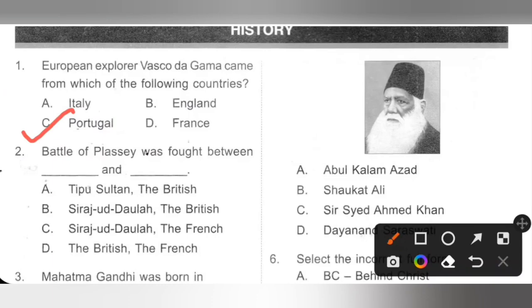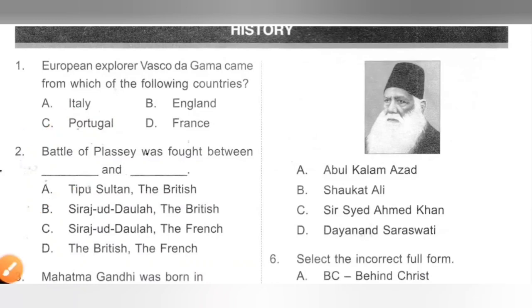Question 2: Battle of Plassey was fought between whom? The Battle of Plassey was fought between Nawab Siraj-ud-Dawla and the British in 1757. Option B is the correct answer.